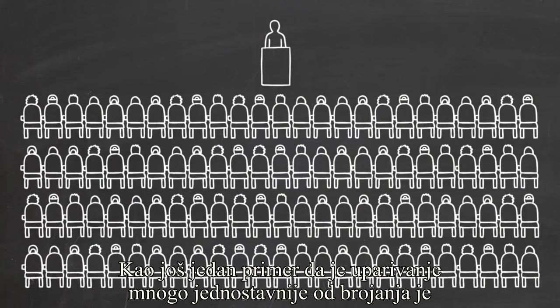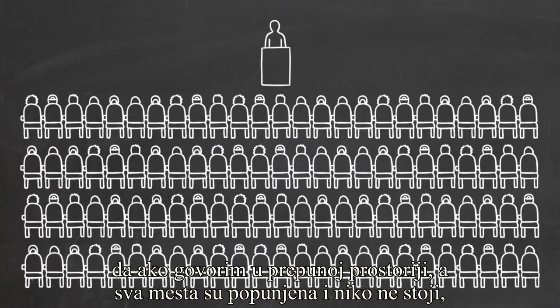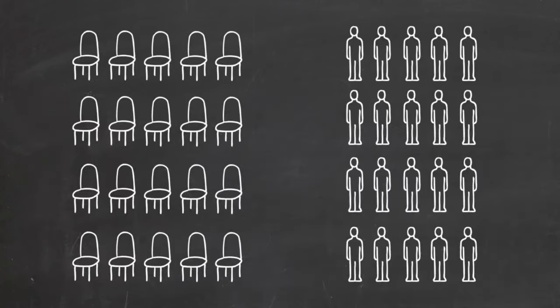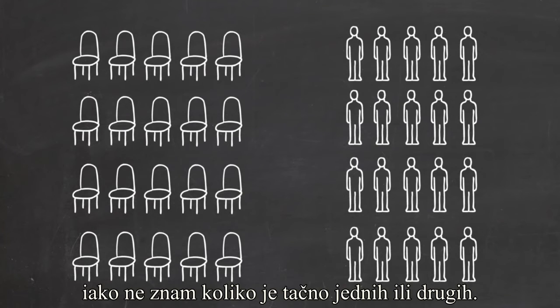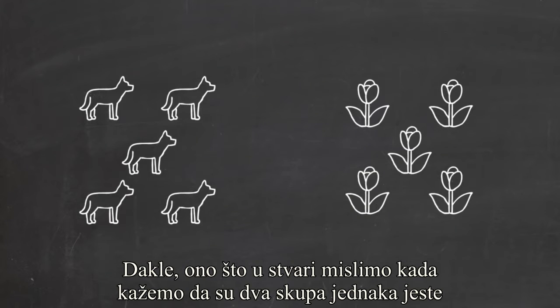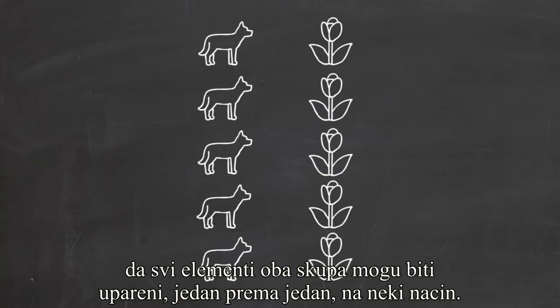As another example of matching being more fundamental than counting, if I'm speaking to a packed auditorium, where every seat is taken and no one is standing, I know that there are the same number of chairs as people in the audience, even though I don't know how many there are of either. So what we really mean when we say that two sets are the same size is that the elements in those sets can be matched up one by one in some way.